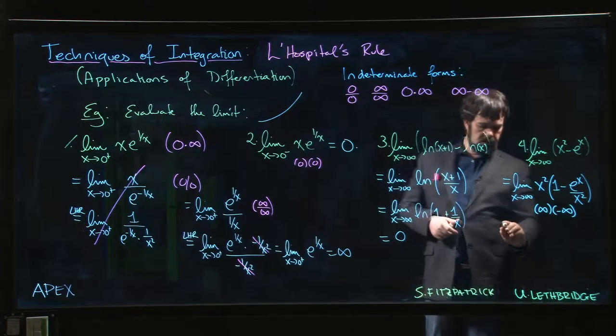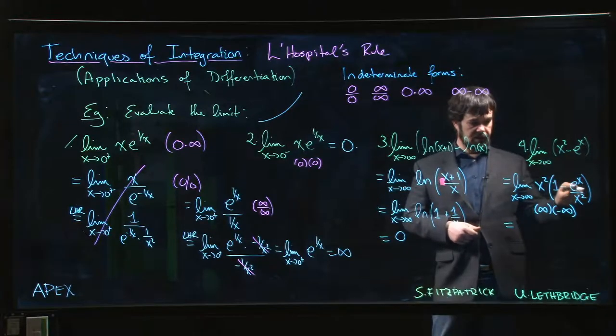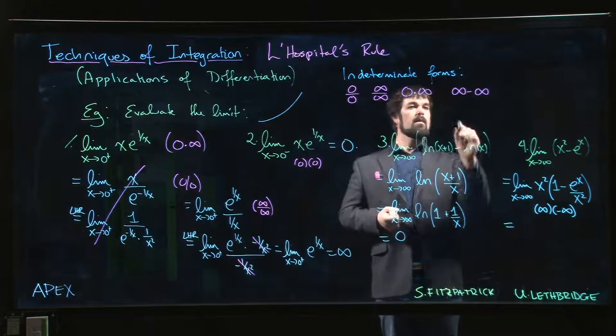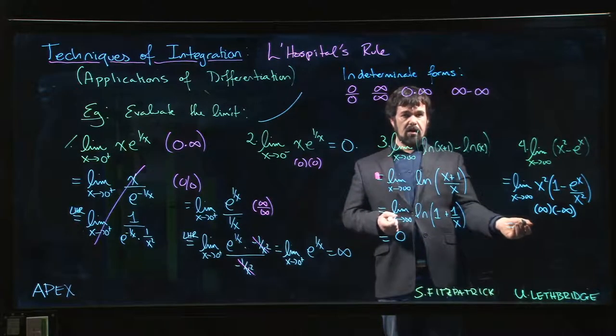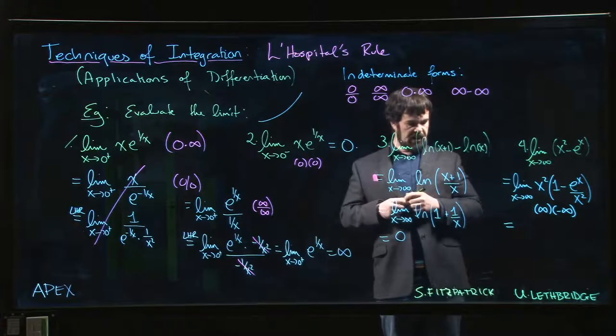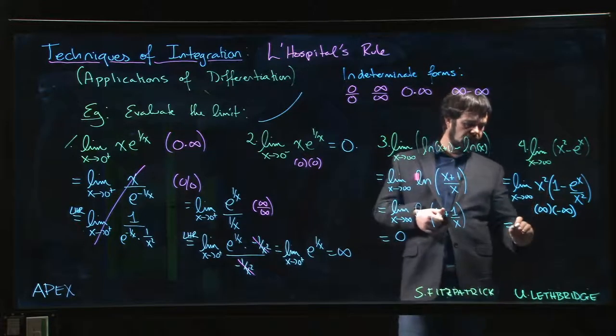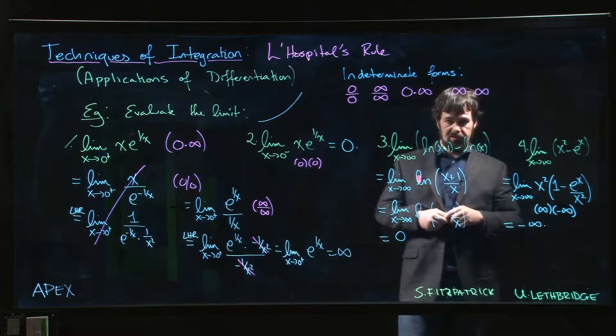There's no need to really do L'Hôpital's rule or anything else here. We needed it to understand this, but we did that in the previous problem, so let's not redo it. Infinity times infinity is not an indeterminate form—infinity times infinity is infinity. There's a minus sign in there, the whole thing is negative, so we're able to conclude in this case that the limit is minus infinity.